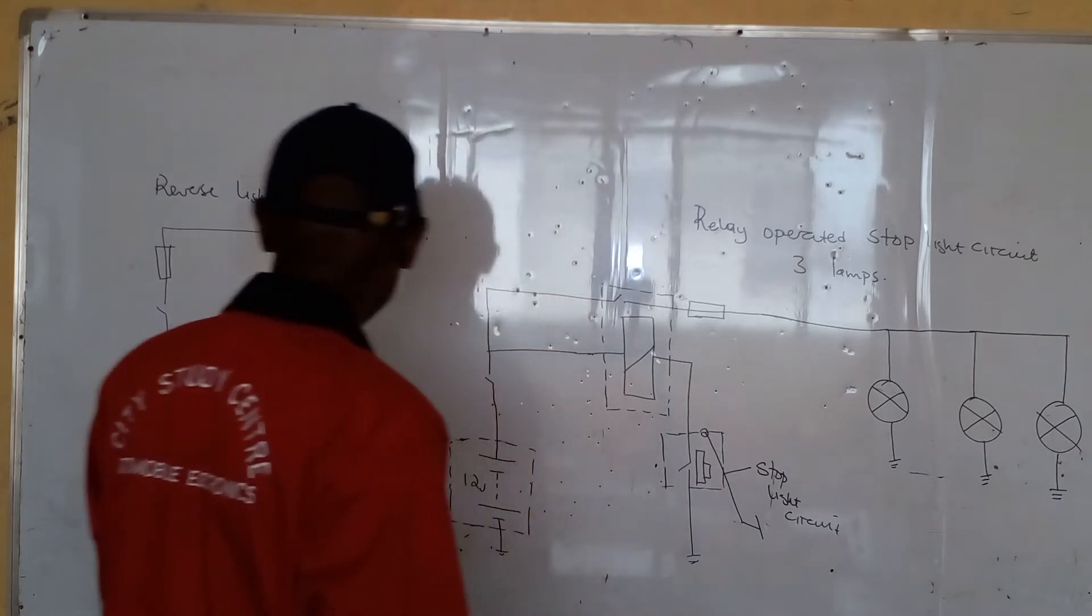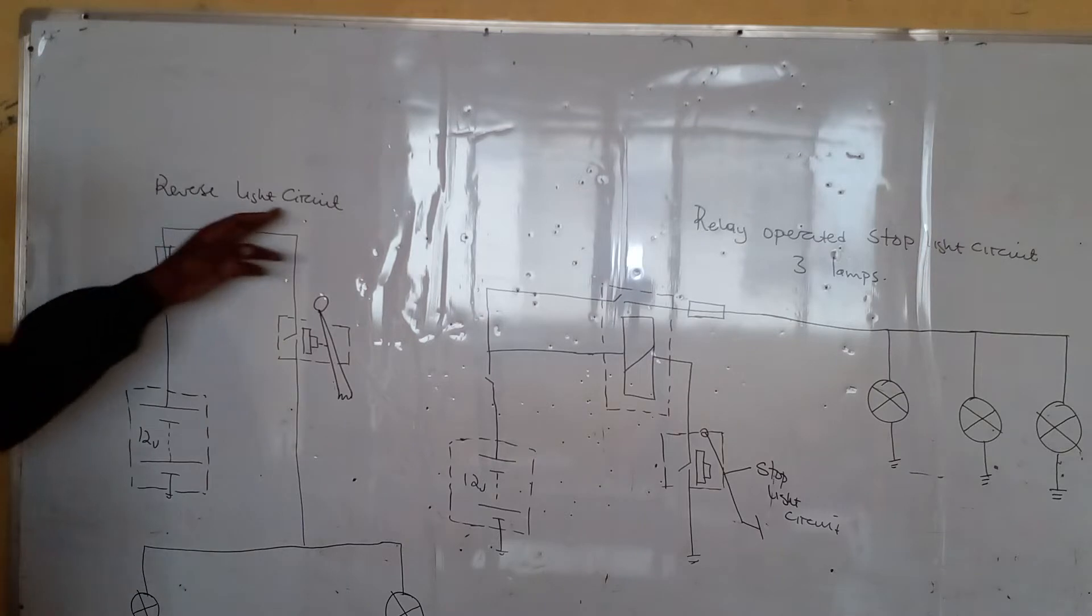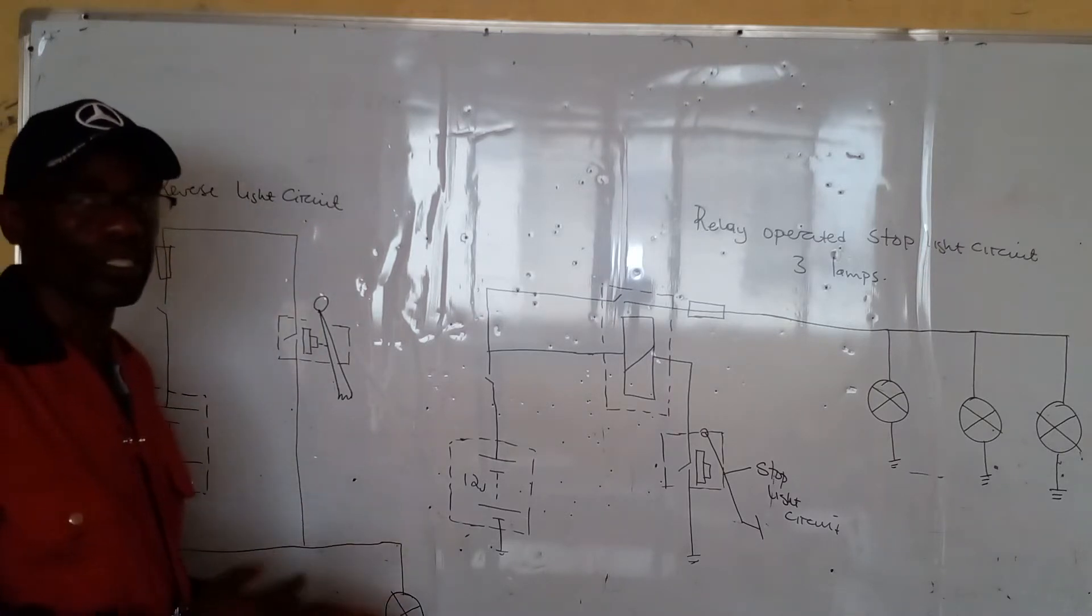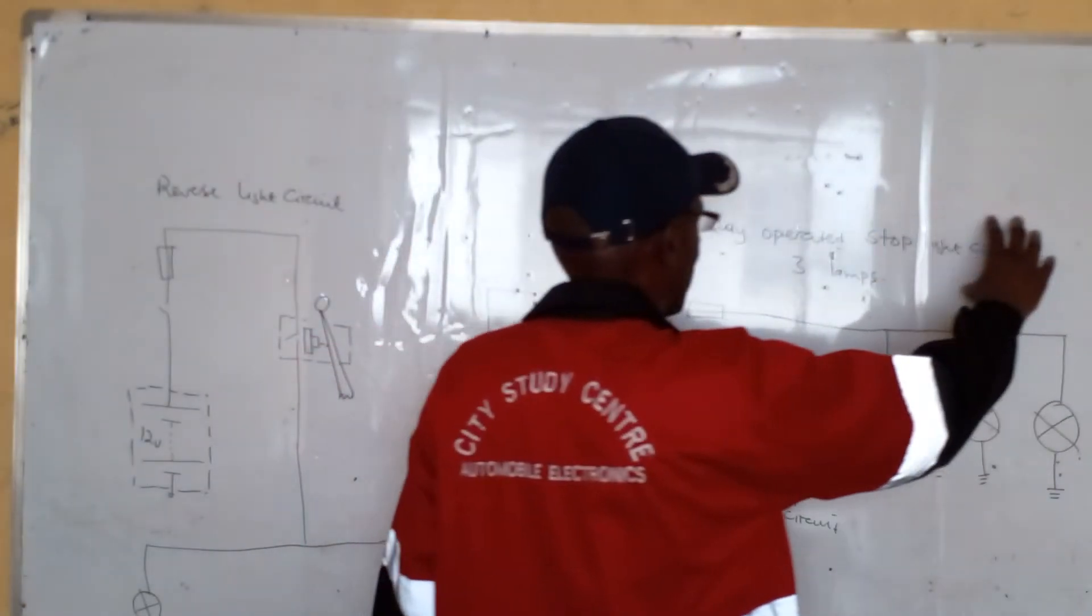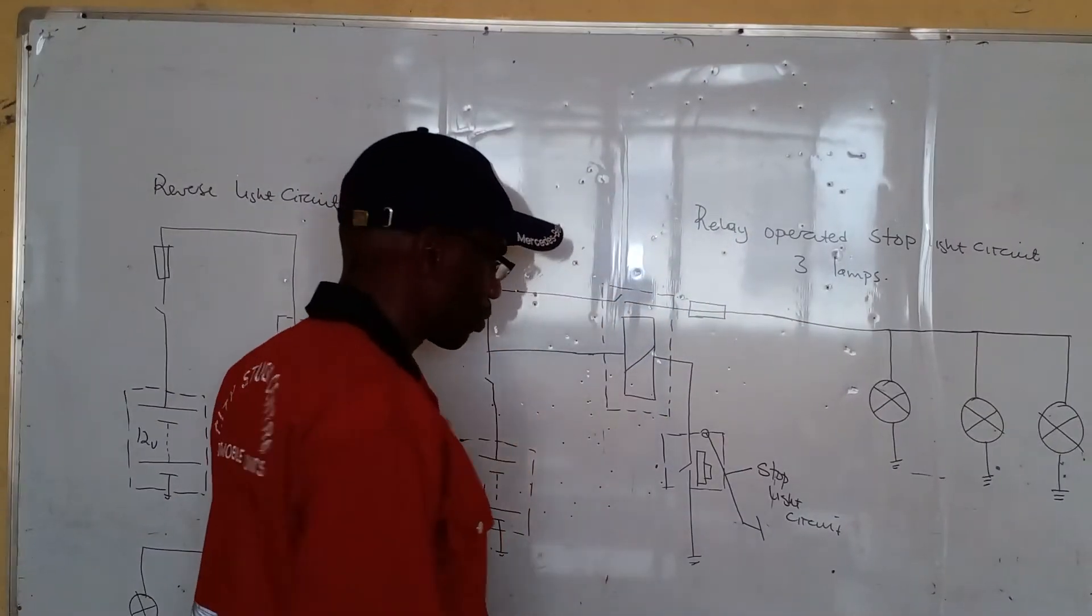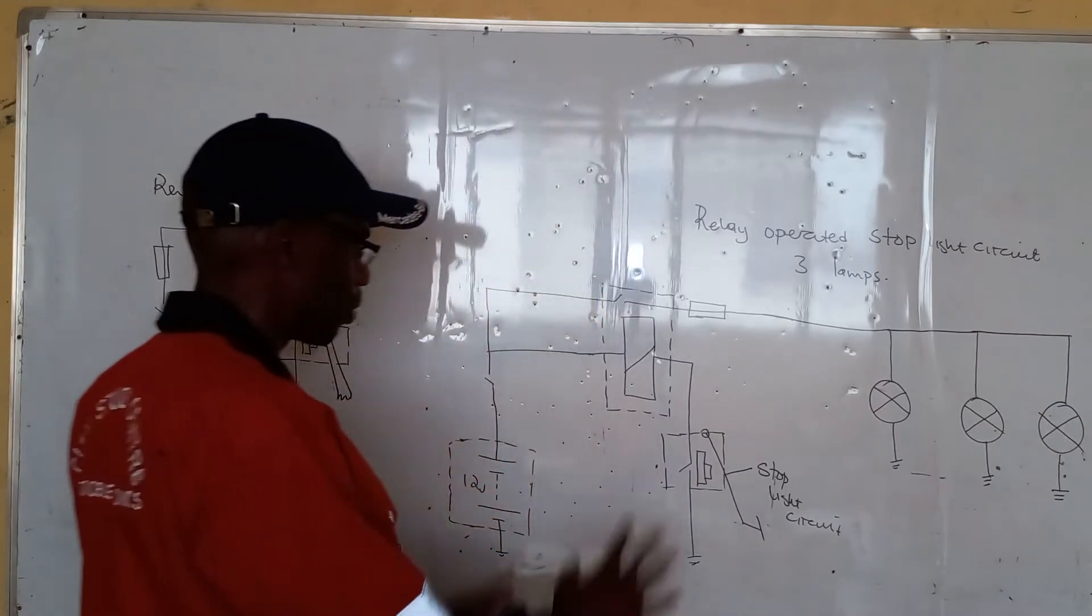Today I am going to present to you the operating principle of the reversing light circuit, that is the study of the reversing light circuit of the modern vehicle, as well as the operating principle of the relay-operated reversing light circuit with three lamps, which is also the standard type of equipment that we find in modern motor vehicles.